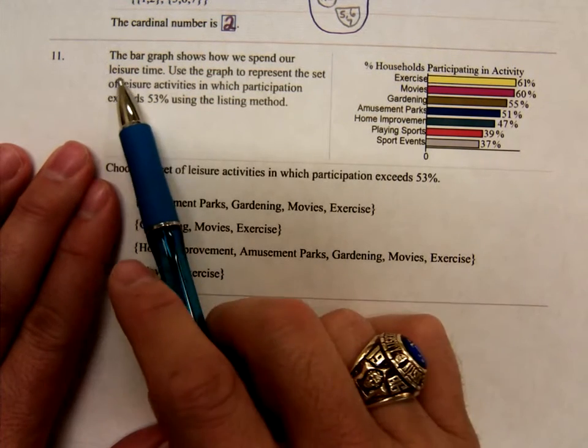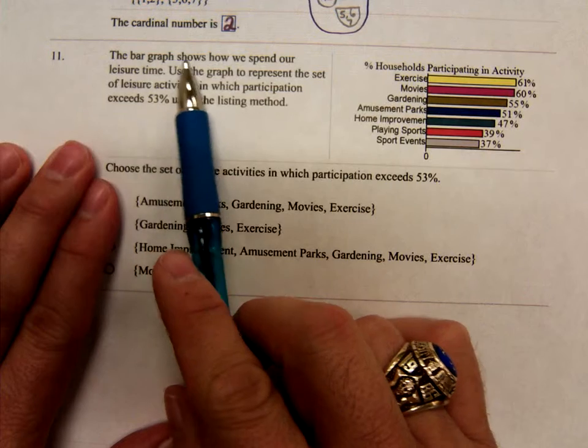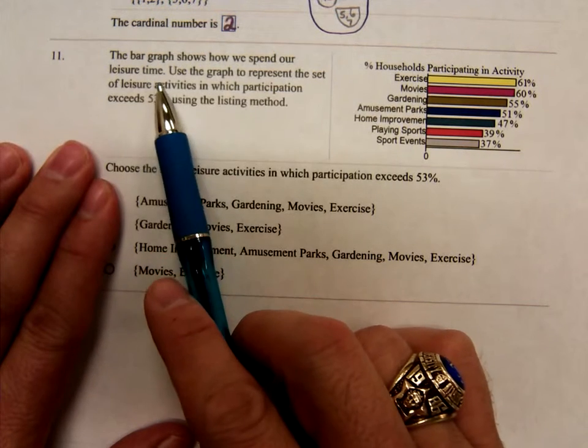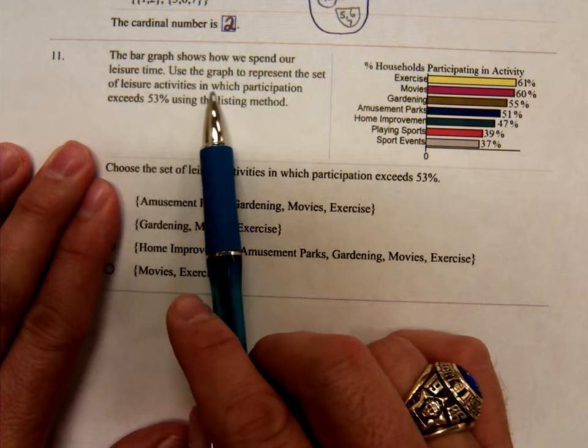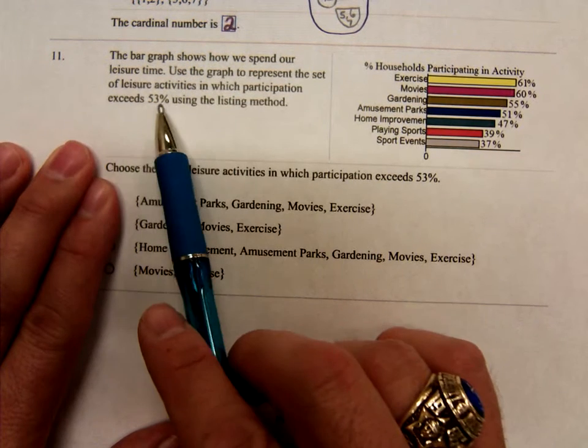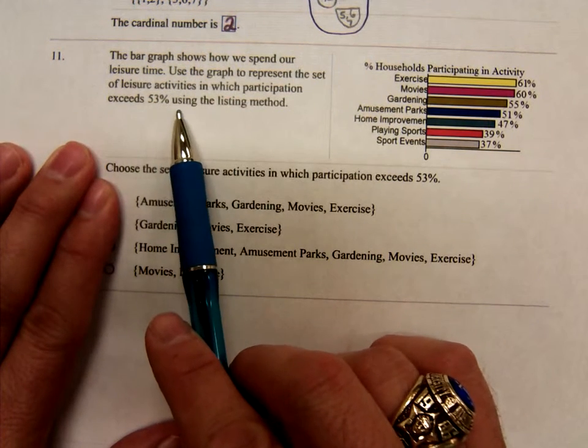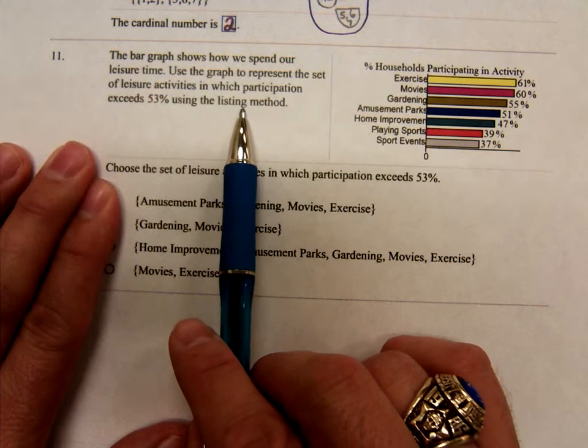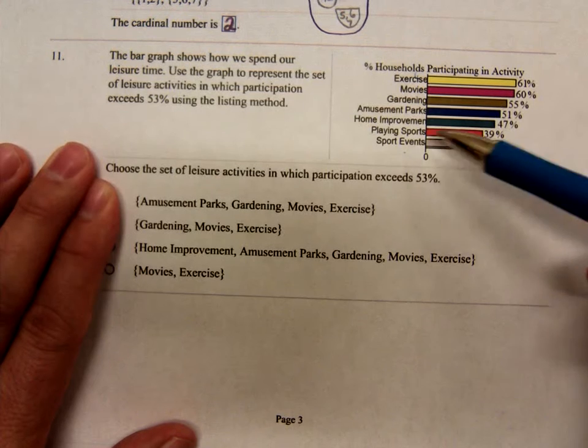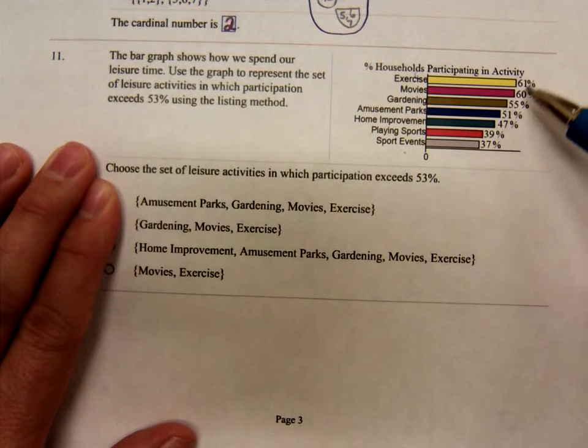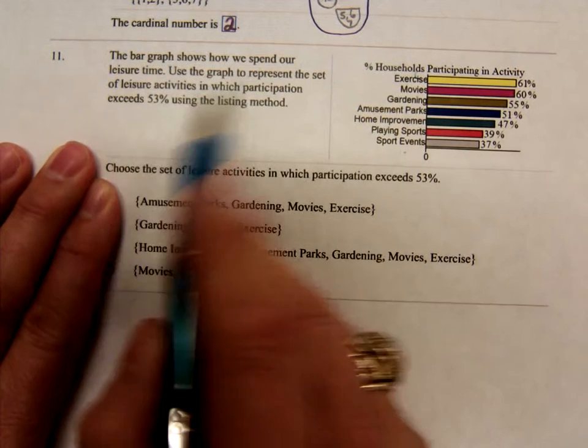Problem number 11 says the bar graph shows how we spend our leisure time. Use the graph to represent the set of leisure activities in which participation exceeds 53% using the listing method. So here's all the activities and here's the percents. Which ones exceed 53%?